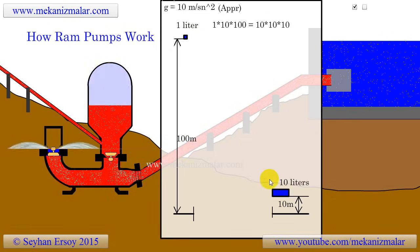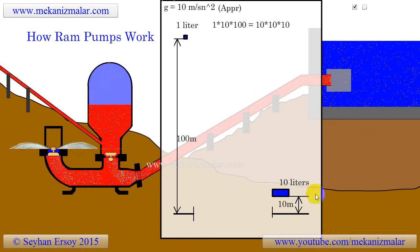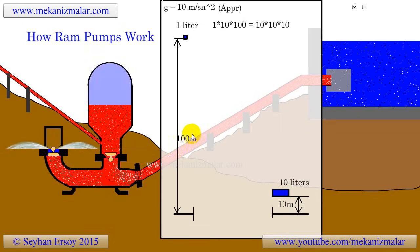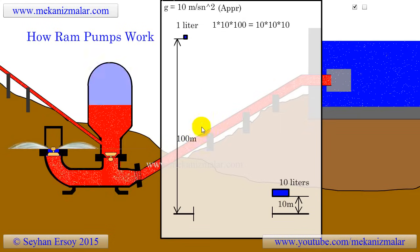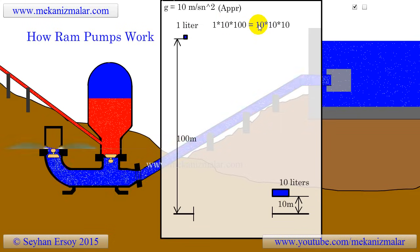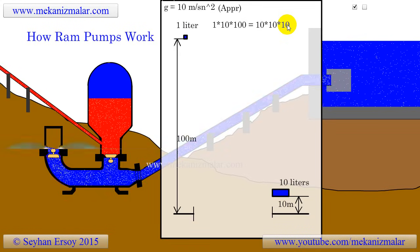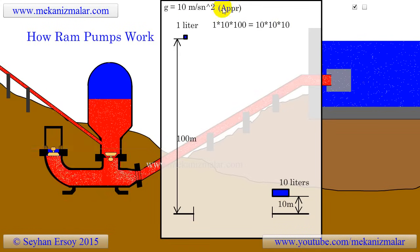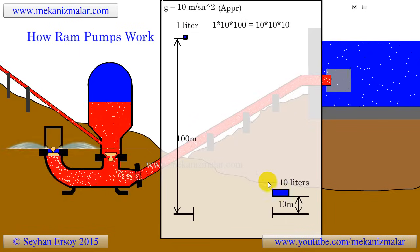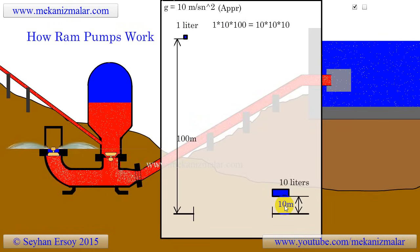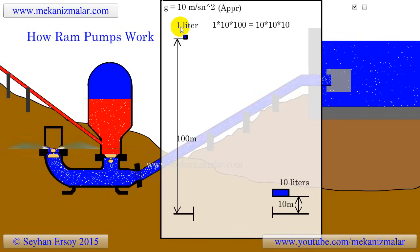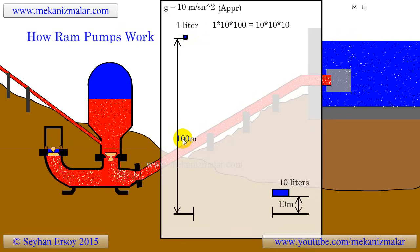As you can see, 10 liters of water with a water head of 10 meters has the same potential energy as 1 liter of water with a water head of 100 meters. The potential energy for both is approximately 1 joule. Assuming 100% efficiency, this means that a water flow of 10 liters per second at a 10-meter drop has enough potential energy to pump 1 liter of water per second up 100 meters.